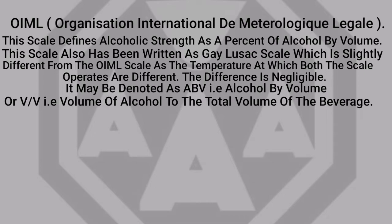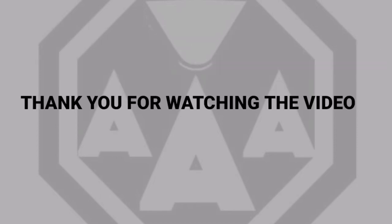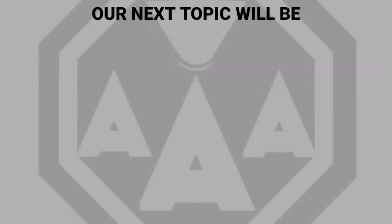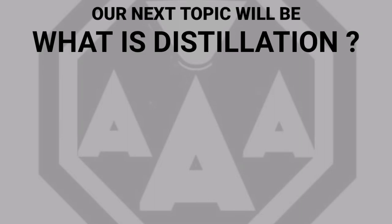Regarding alcoholic strength, the OIML — Organisation Internationale de Métrologie Légale — scale defines alcoholic strength as a percentage of alcohol by volume. This scale is also known as the Gay-Lussac scale, which is slightly different from the OIML scale as the temperatures at which both scales operate are different, though the difference is negligible. It may be denoted as ABV (alcohol by volume) or V/V (volume of alcohol to the total volume of the beverage).